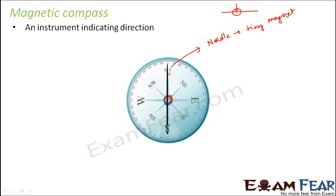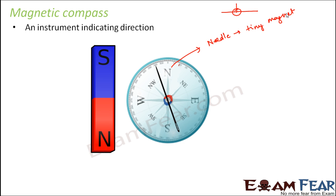Whenever you put this magnetic compass in front of a magnet, it shows some deflection. Why? Because this magnet tends to attract another magnet.